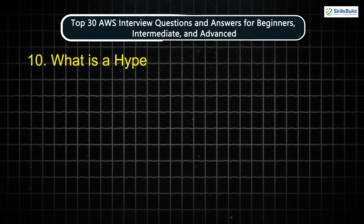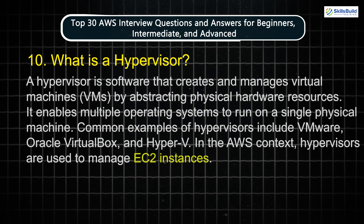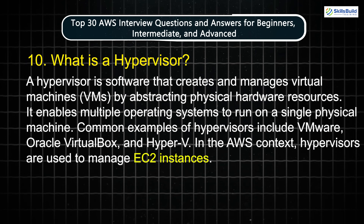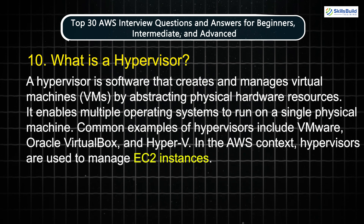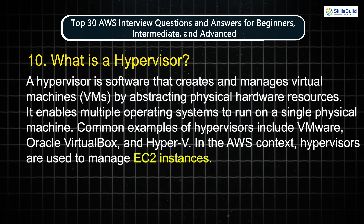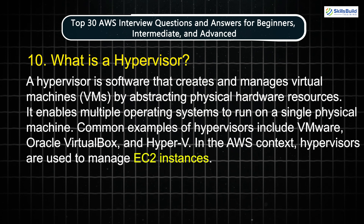Question 10: What is a hypervisor? A hypervisor is software that creates and manages virtual machines by abstracting physical hardware resources. It enables multiple operating systems to run on a single physical machine. Common examples of hypervisors include VMware, Oracle VirtualBox, and Hyper-V. In the AWS context, hypervisors are used to manage EC2 instances.